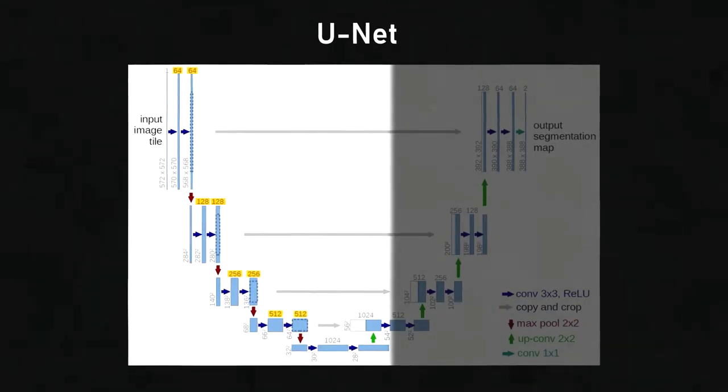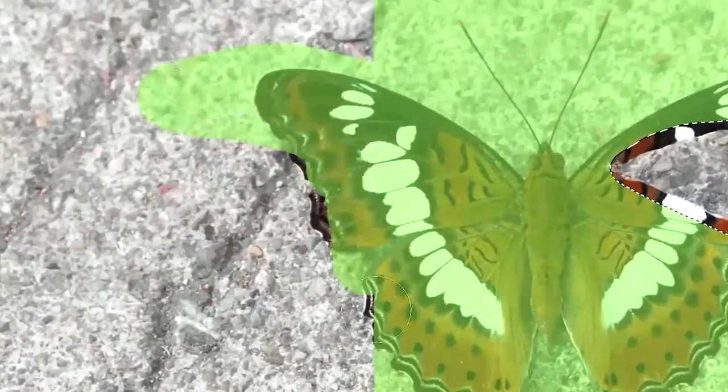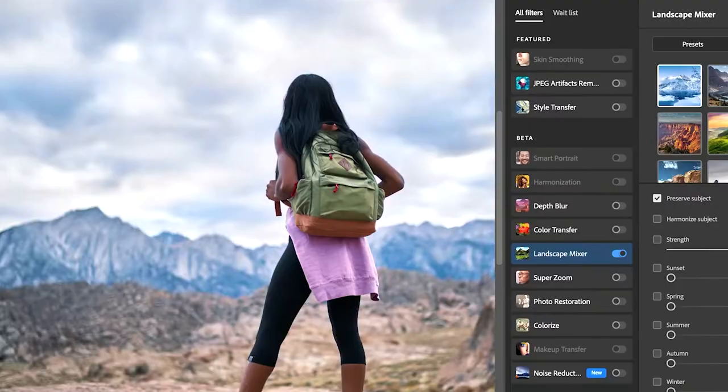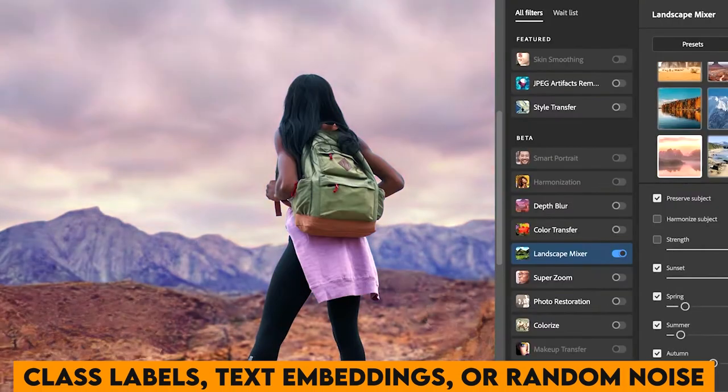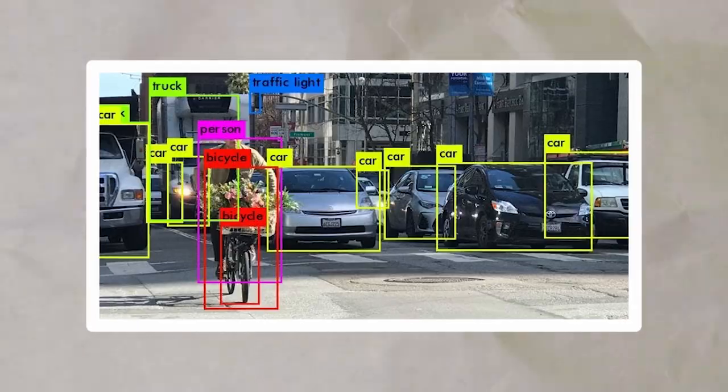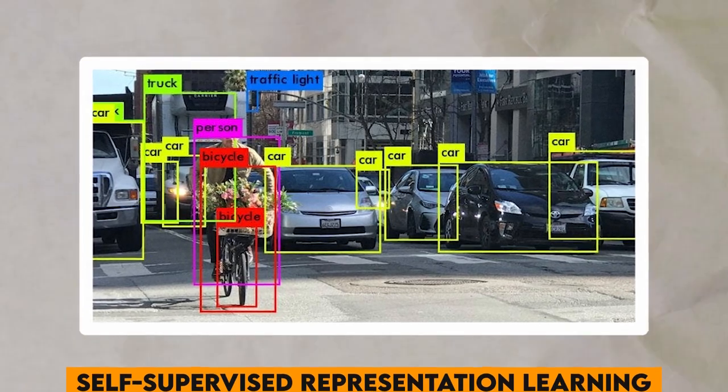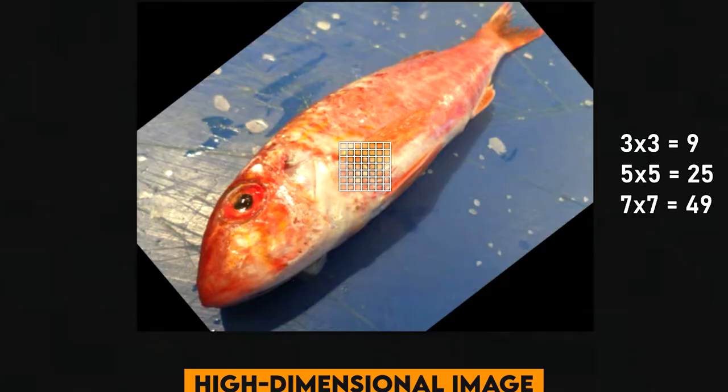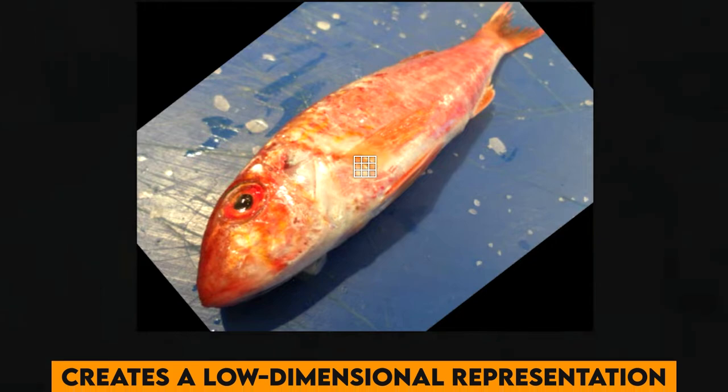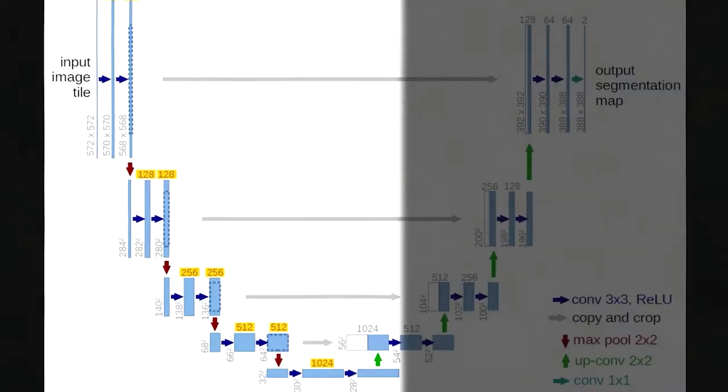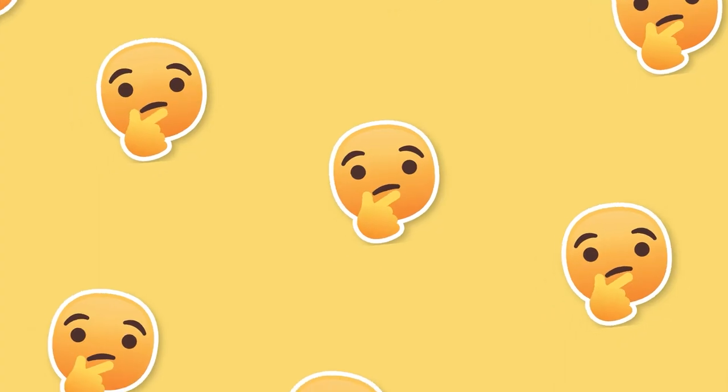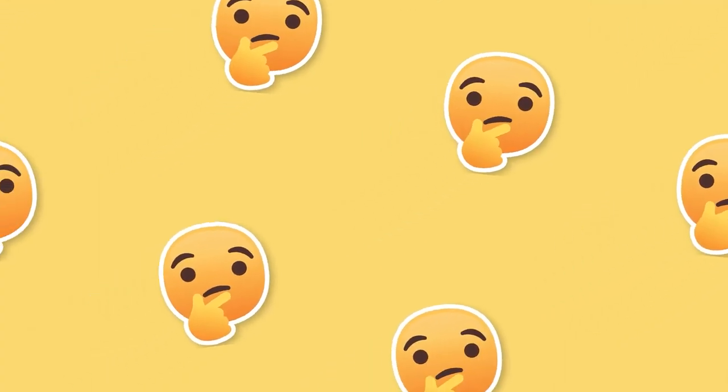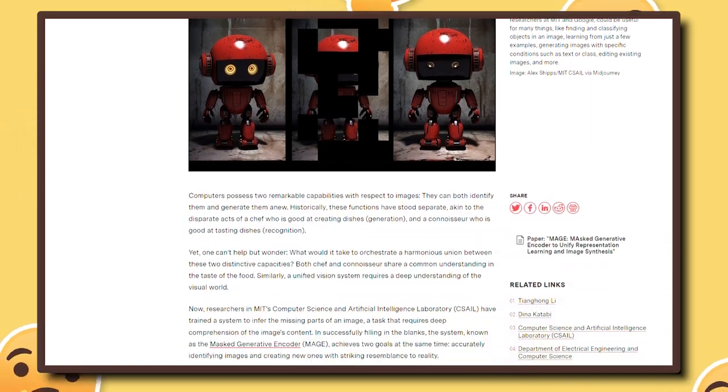Building image generation and recognition systems used to involve two distinct processes. First, there's the generative modeling, where the system learns to create detailed images from simpler inputs like class labels, text embeddings, or random noise. Then there's the self-supervised representation learning, which takes a high-dimensional image and creates a low-dimensional representation for feature detection and classification. These two techniques are powerful on their own, but what if we combined them into a unified architecture? That's exactly what Mage does.